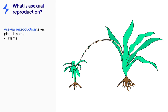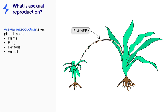Many organisms reproduce asexually. It is common in the plant world where plants can produce runners, as seen here. Or a cutting can be taken and the cut part of the plant will produce roots and become a whole new plant. Other organisms include some fungi, bacteria and other parasites, and also some animals such as starfish, aphids and even some species of shark.